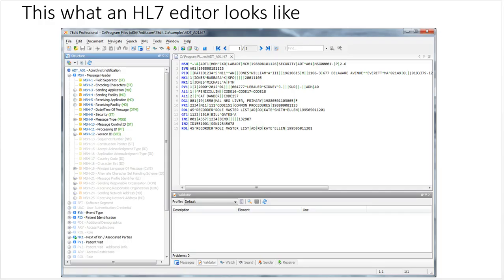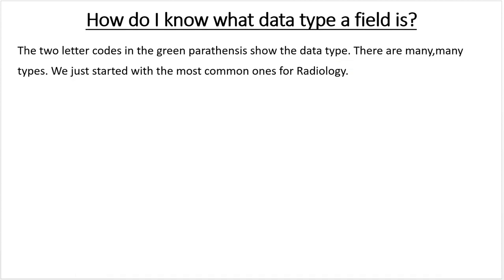This is what an HL7 editor looks like. I've taken a message, put it into my HL7 editor, and it breaks down every field. You can see here that MSH1 is the field separator and it's going to be data type ST. MSH2 is the encoding characters, also ST. Sending application is going to be data type HD. The date and time of message is going to be data type DTM. Security is going to be ST. All of these in green tell me what the data type is. That's really easy to do if your facility has those tools. The two-letter codes in the green parentheses show the data type. There are many, many types — we just started with the most common ones for radiology.